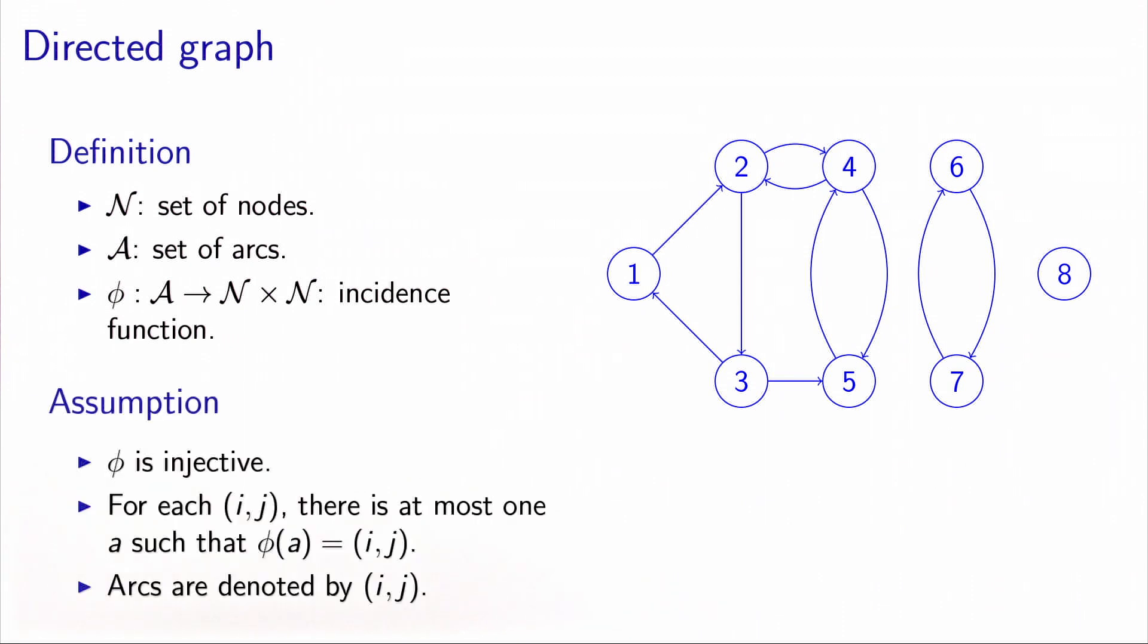We will assume in our applications that the incidence function is injective. This means that if we take any two nodes, we have at most one arc that connects them. So we can actually denote the arcs using the notation given by the pair of nodes. Because between i and j, either there is nothing, or there is one arc. And then (i,j) refers to that arc.